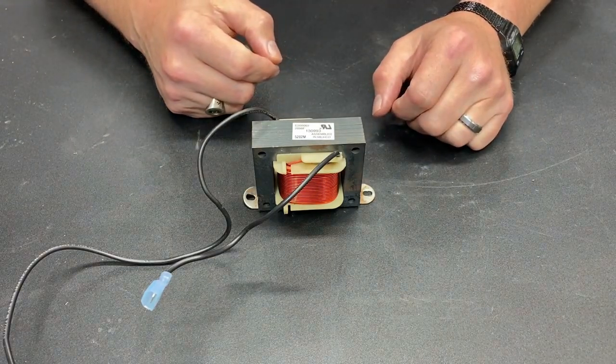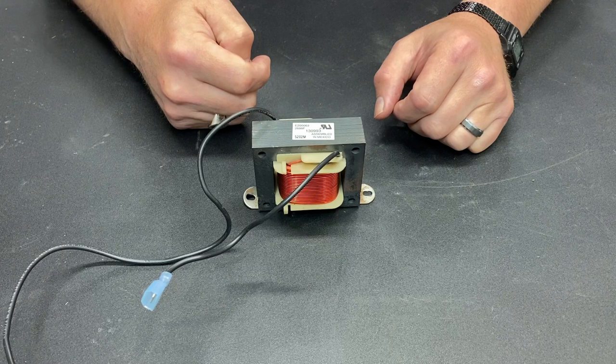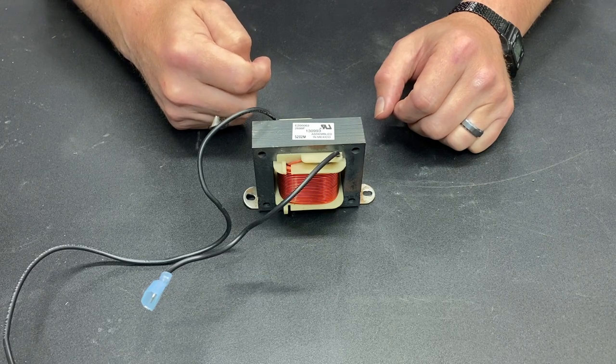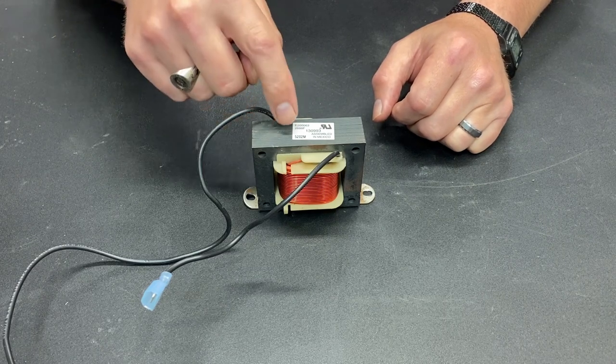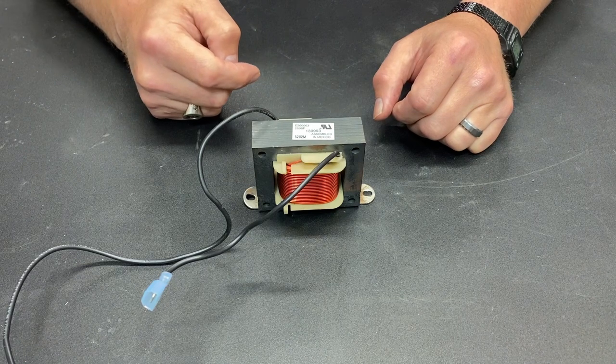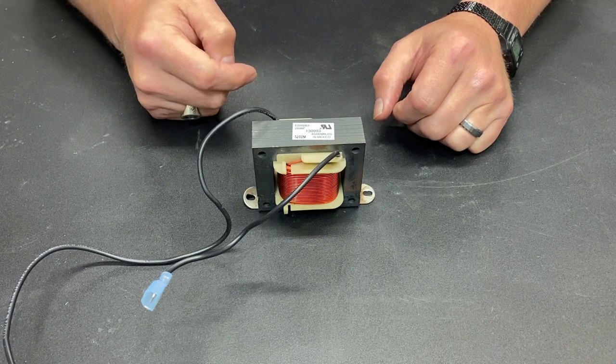So this is a motor choke out of a treadmill. If you're going to run an SCR voltage controller as a way to power your treadmill motor, it is required to run one of these if you want that motor to have any kind of longevity.